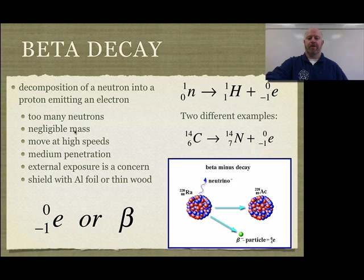The mass of a beta particle is negligible because basically it's an electron. They are moving at high speeds, and they have what we call medium penetration, which means there is some concern of exposure to us in terms of external exposure, but we can do simple things to shield us from beta decay if we need to.